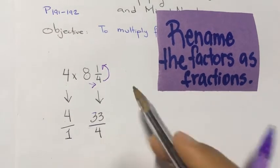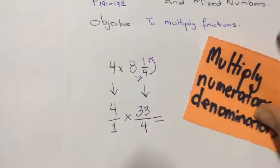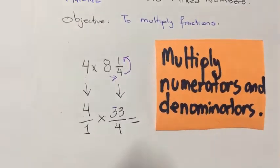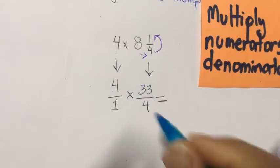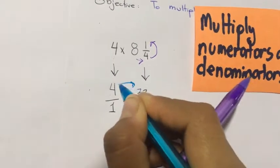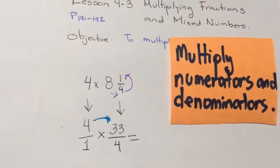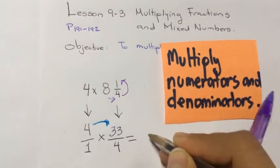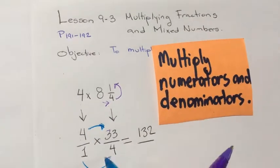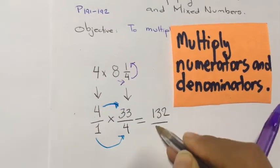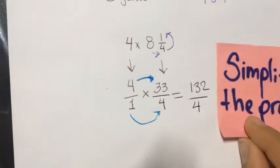It doesn't matter if it's proper or improper. Now we move to the second step: multiply numerators and denominators. We multiply the numerators like this — 4 times 33 is 132. Now we multiply the denominators: 1 times 4 is 4.